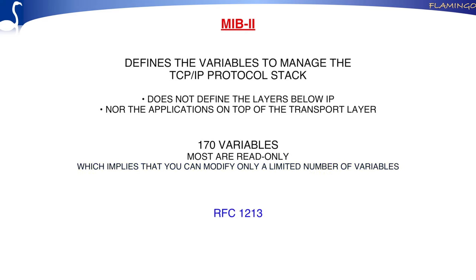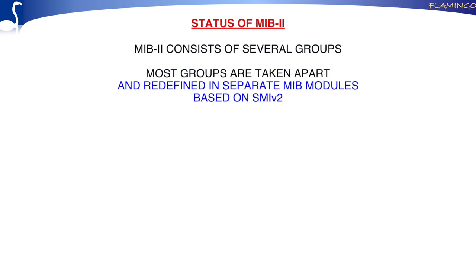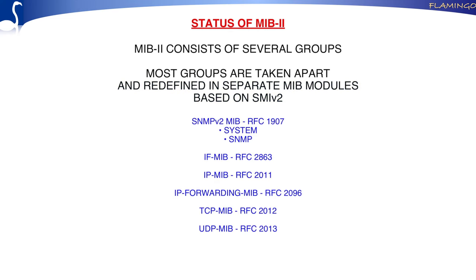MIB-2 is defined according to SMI version 1. The MIB-2 consists of a number of groups, and these groups are now being taken apart — defined in separate MIB modules. I've written down here the RFCs and the groups that are currently valid, but they do not yet have full standards status.